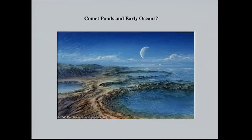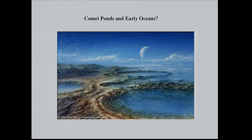Before discussing impacts further, I want to remind people of the pressures involved. We live at one atmosphere. Under five kilometers of ocean the hydrostatic pressure is about 500 bars. Ten kilometers of crust at lithostatic pressure is about 30,000 bars. But the minimum peak pressures we might expect for comets hitting Earth — a comet hitting rocky Earth — would be on the order of 90 GPa, or five orders of magnitude higher in pressure.